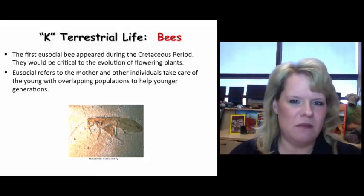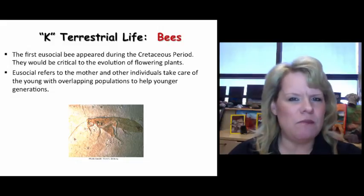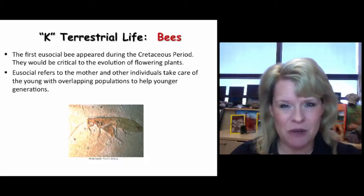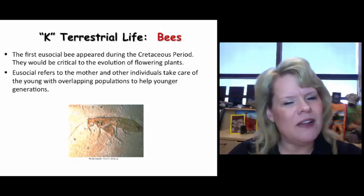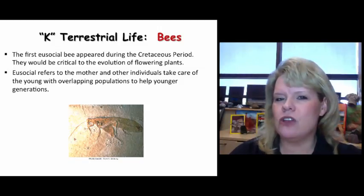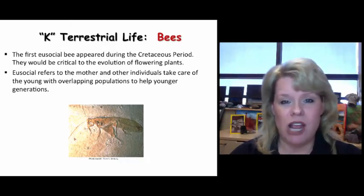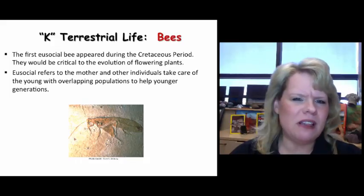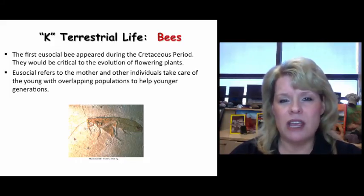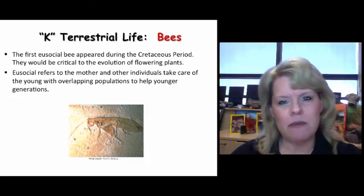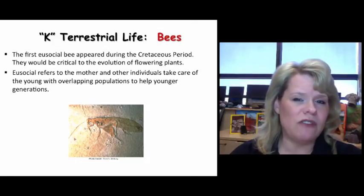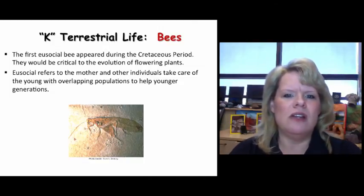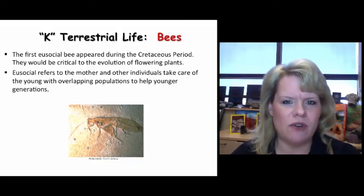An important development in the insect realm is bees. We all know what bees do — they're pollinators — so that should give you a clue as to something that's going to evolve in the plant kingdom that will require pollinators. Our first eusocial bee appeared during the Cretaceous period, and this is going to be important for angiosperms, which are flowering plants. Eusocial means mothers and other female individuals take care of the young, enabling them to repopulate — a self-sustaining community. There's a queen bee, and the colony is all about taking care of her; they'll die for her.